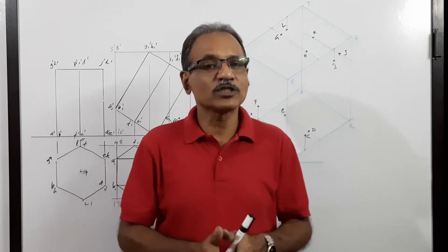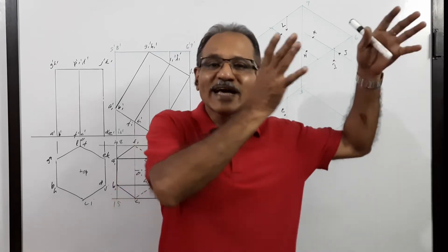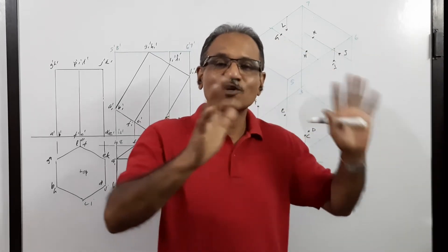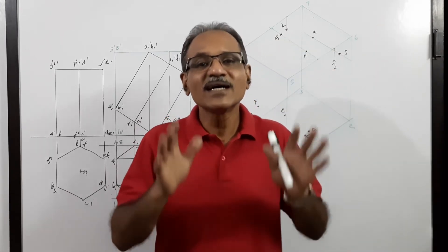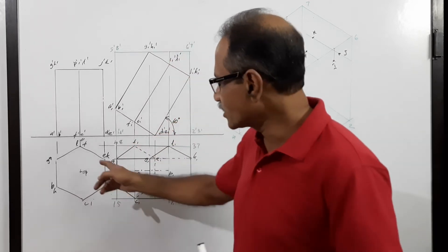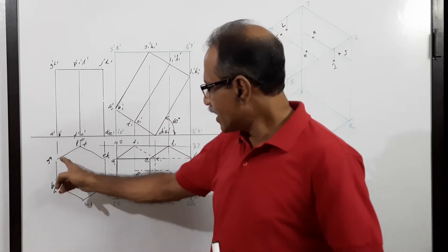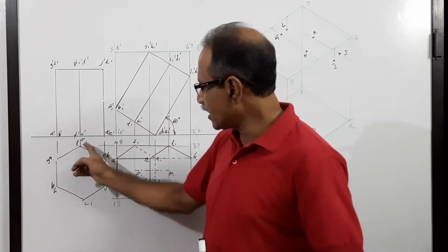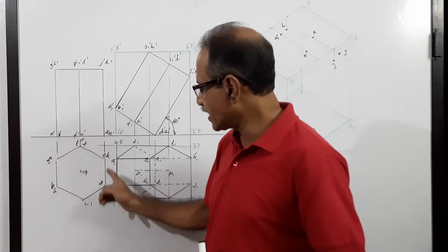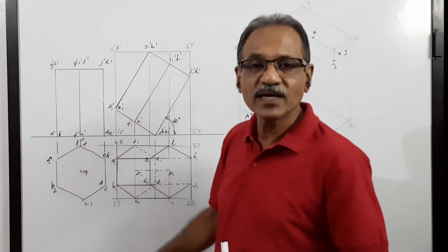To draw the object in the tilted position, you inscribe it in a box, draw the isometric view of the box, and inside the box locate the points of the hexagonal prism. That is the procedure. Let us see the simple position: points A B C D E F G H I J K L — plan and elevation of the hexagonal prism.